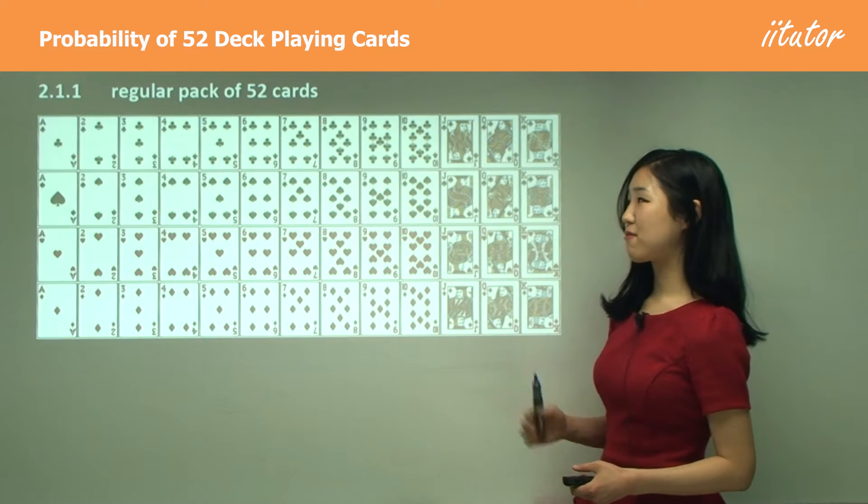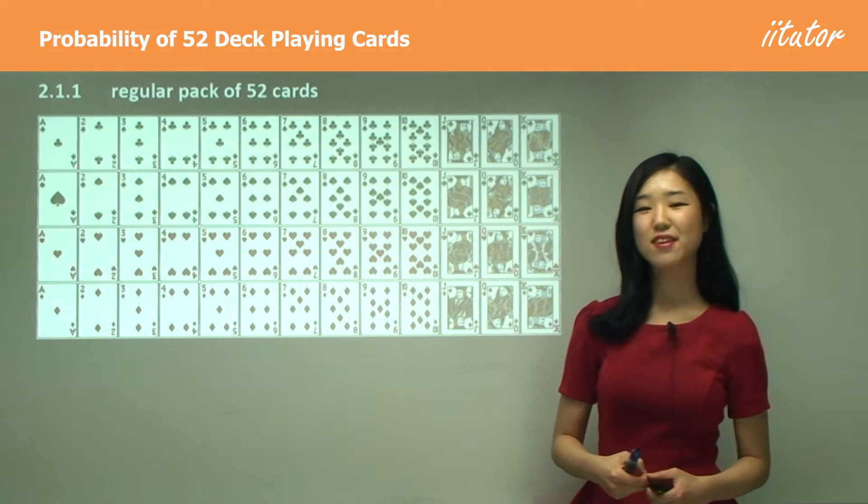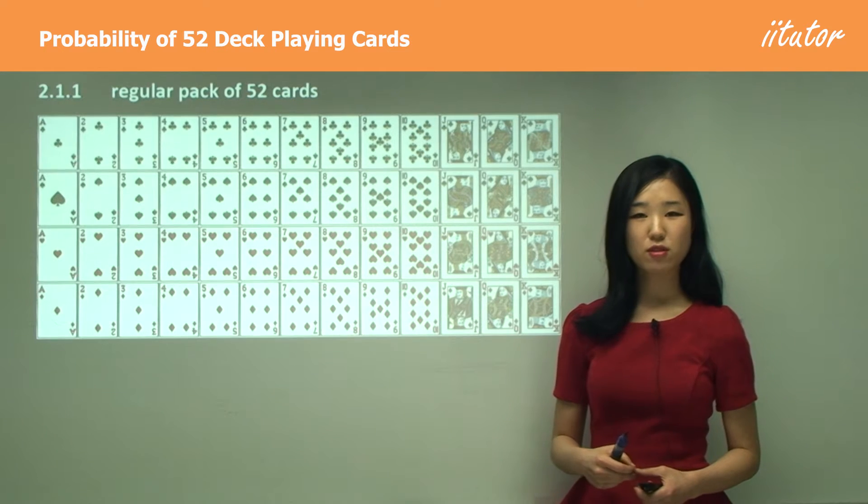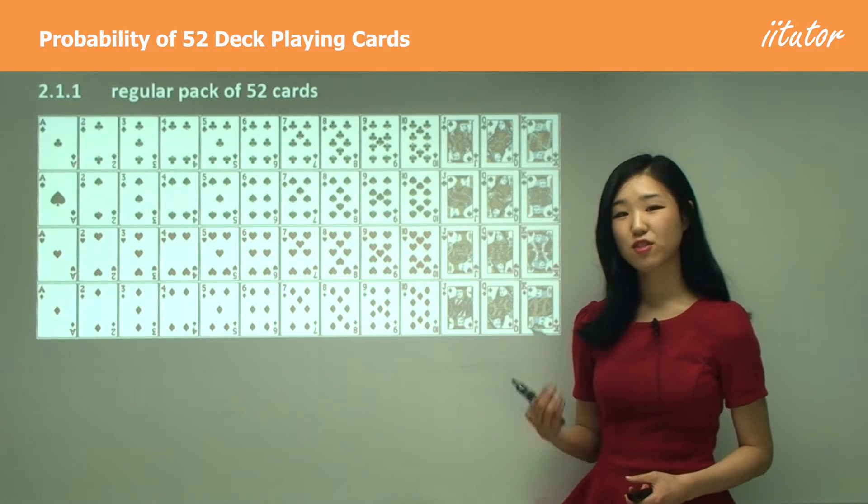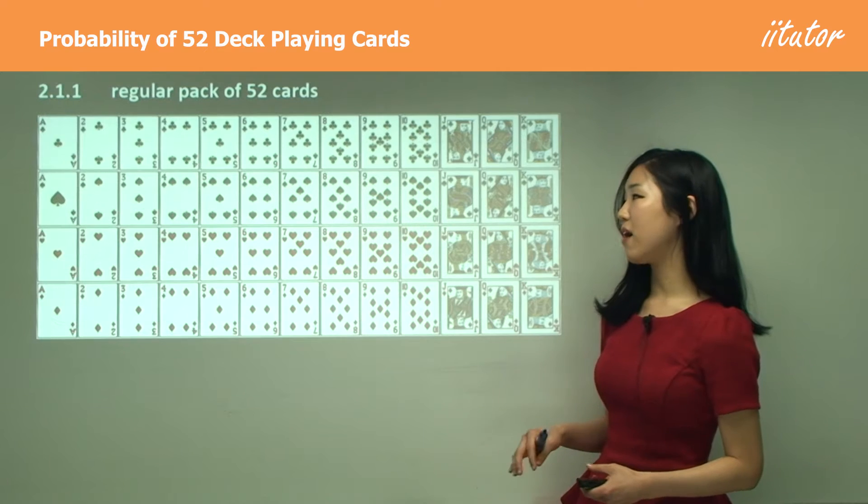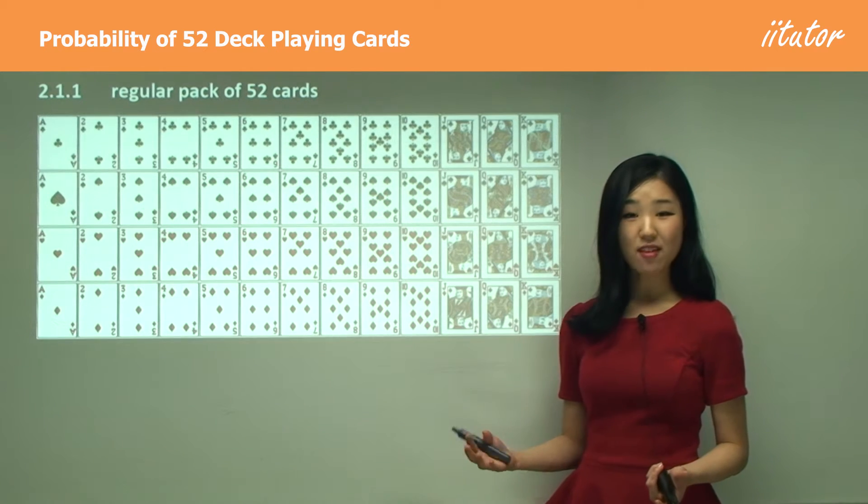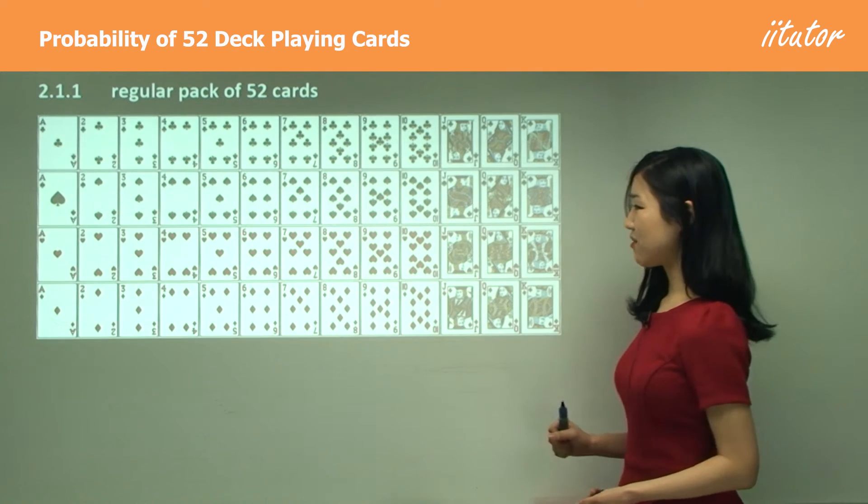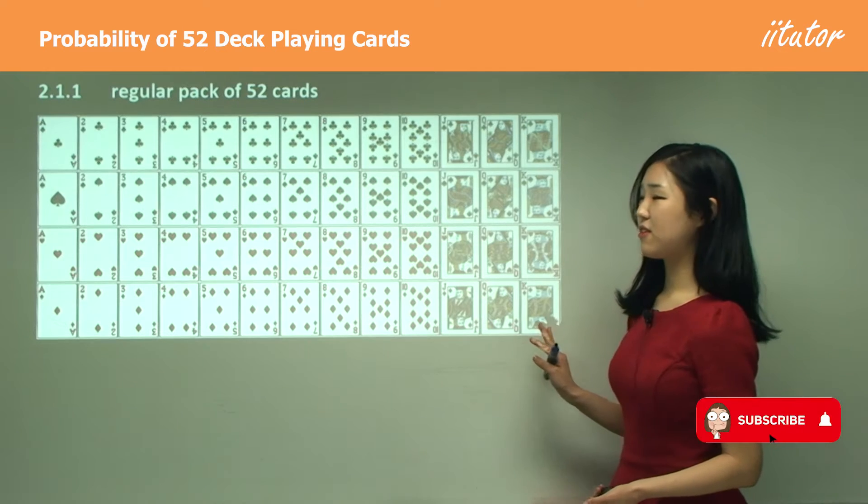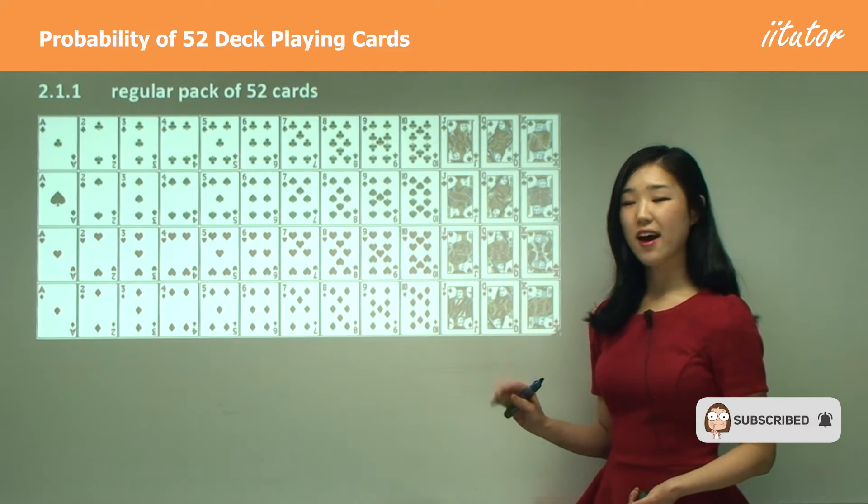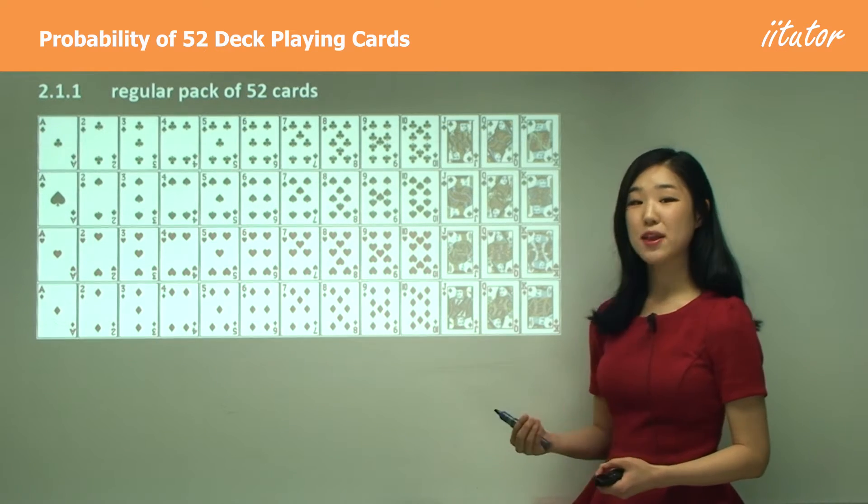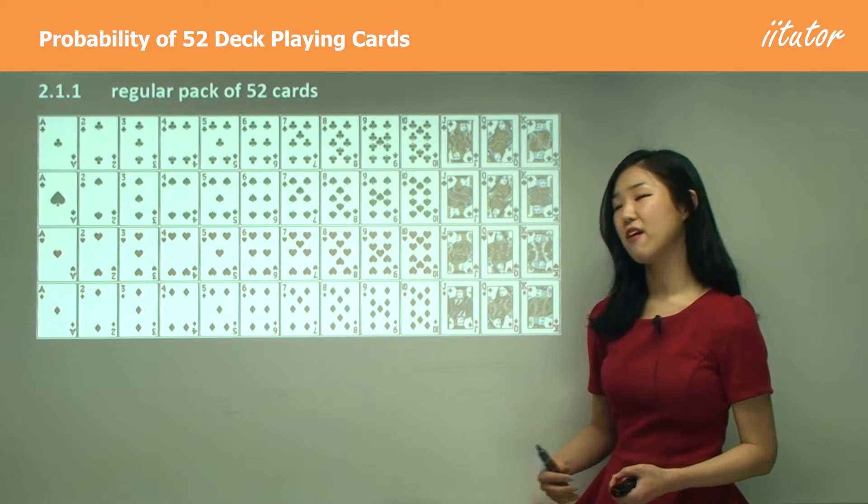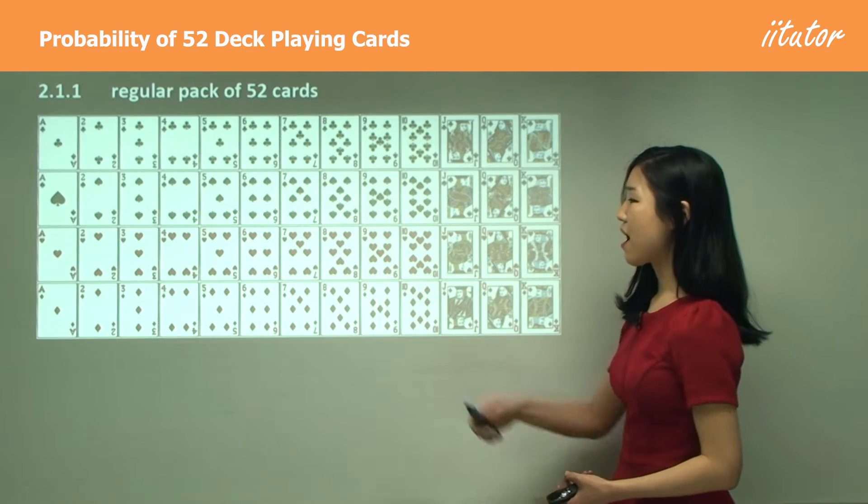I'm going to start off with a regular pack of 52 cards because a lot of probability questions relate to cards. So you must know very well what's in a pack of cards and what they consist of. You can see here I have all these pictures of all the cards in the deck, and you need to know how many of each and what different colors there are as well.